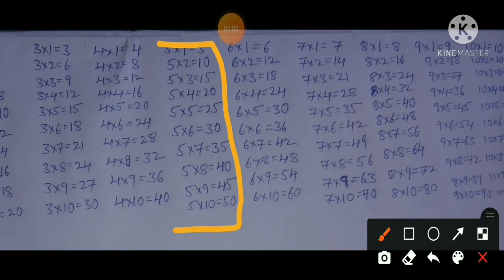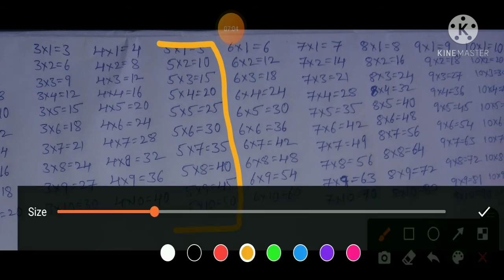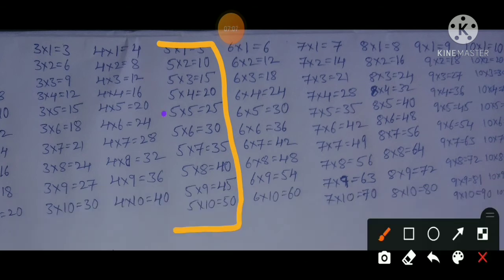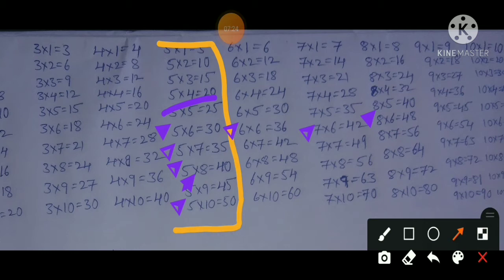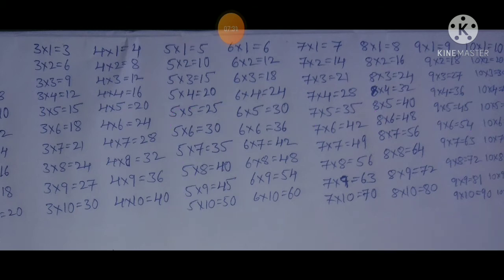Coming to the 5th table. We already covered up to 4×5=20 in previous tables. Now we learn from 5×5=25 onwards: 5×6=30 and 6×5=30; 5×7=35 and 7×5=35; 5×8=40 and 8×5=40; 5×9=45 and 9×5=45; 5×10=50 and 10×5=50. Completed.